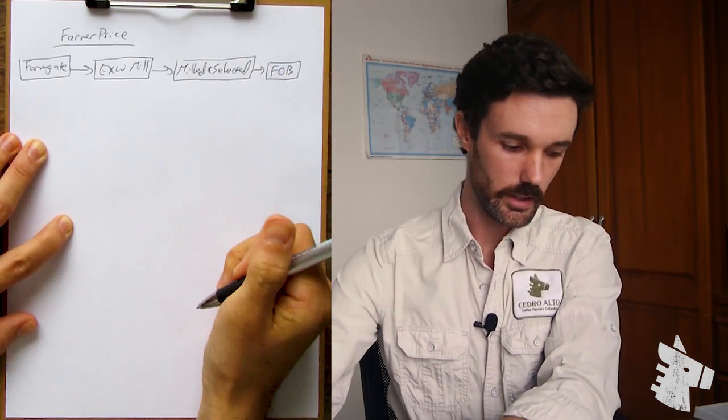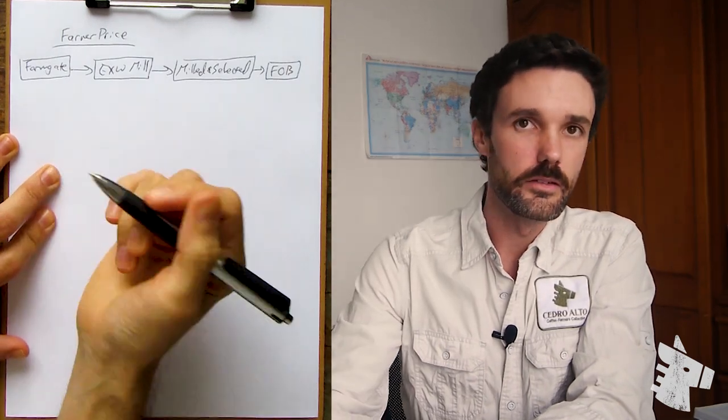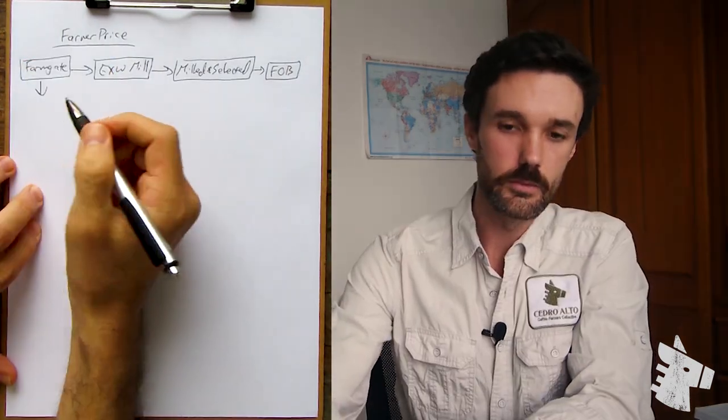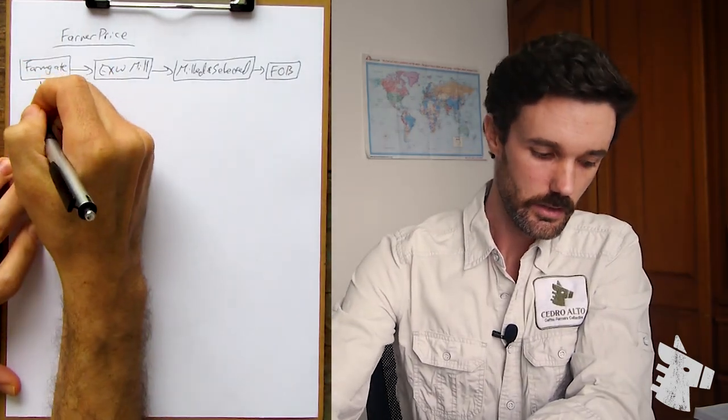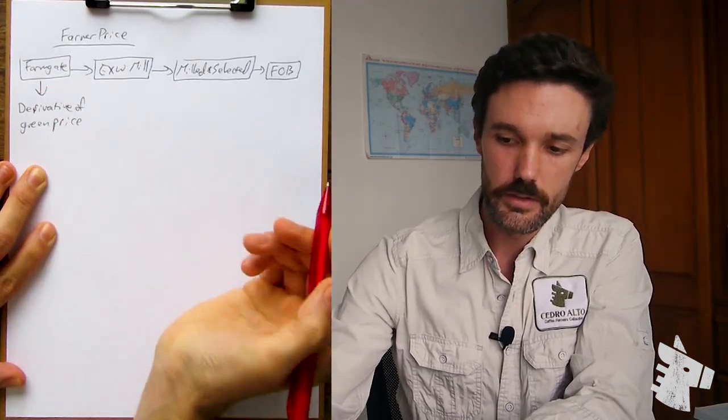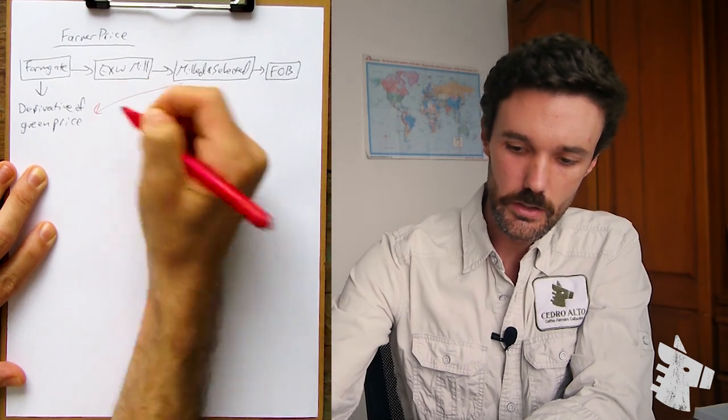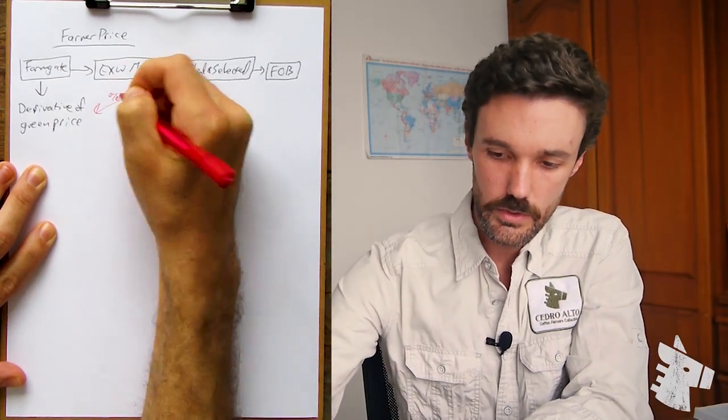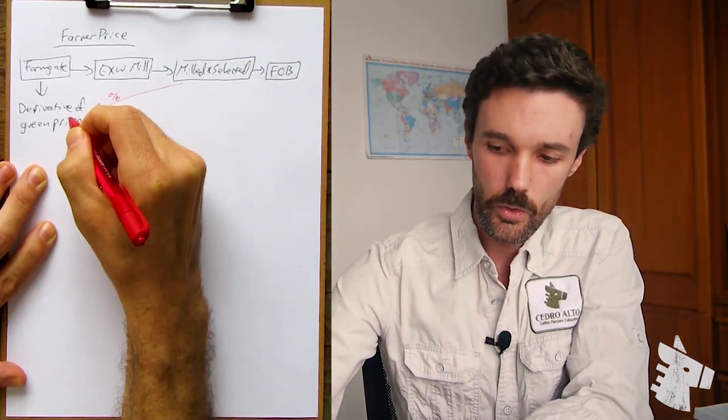If we're talking about small farmers, then this is most likely going to be a farm gate price, which is derivative. So if the farm gate price is derivative of the milled and selected price, what is the conversion?